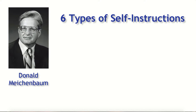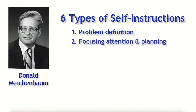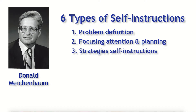Dr. Meichenbaum broke self-instructions down into six types. First, problem definition: What is it I have to do here? What do I know that will help me get this done right? The second is called focusing attention and planning: I need to stay focused on the task at hand and I need to use what I know to create a plan to get this done. The third type is strategy self-instructions — these are the self-instructions that relate to the steps in the strategy, such as: I need at least three reasons. Hmm, what do I know about what makes a good reason?